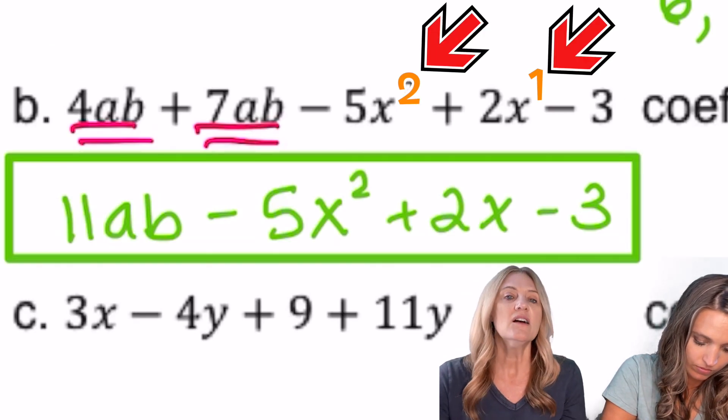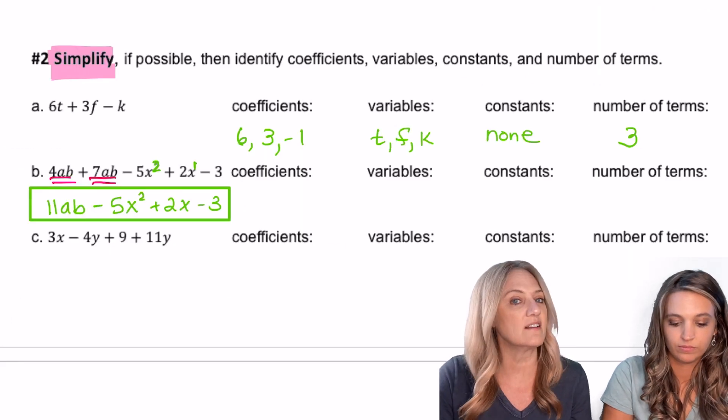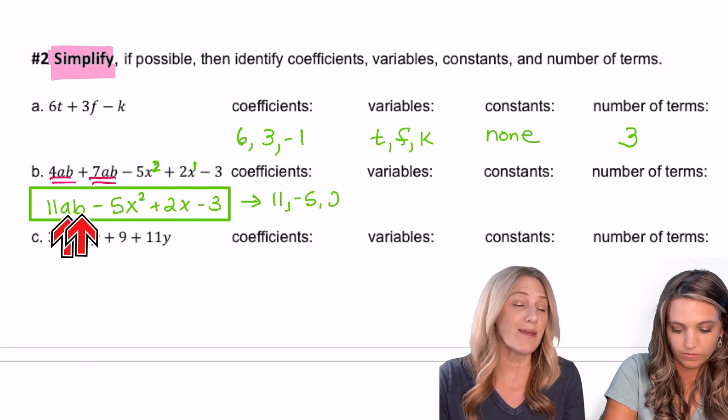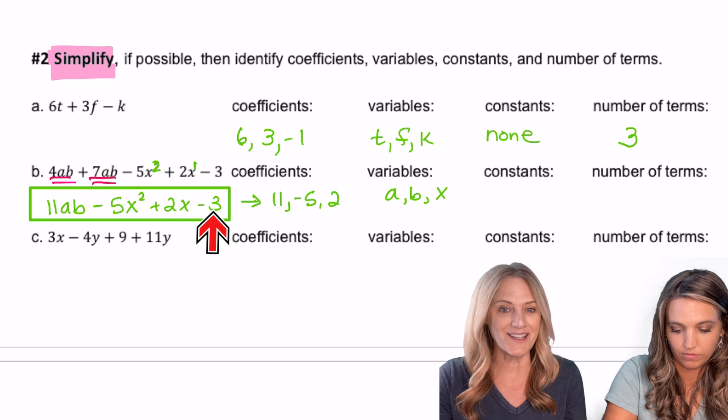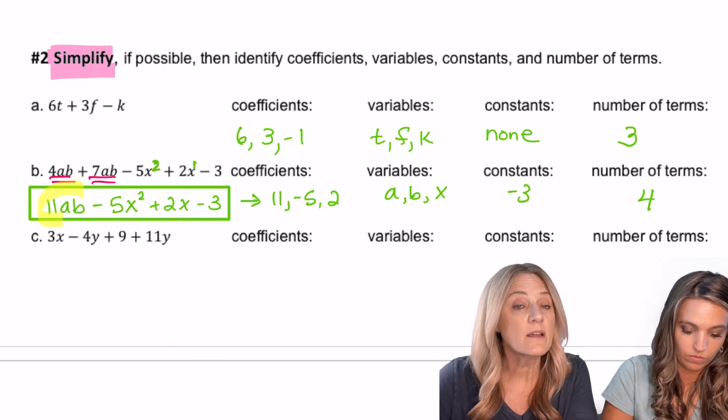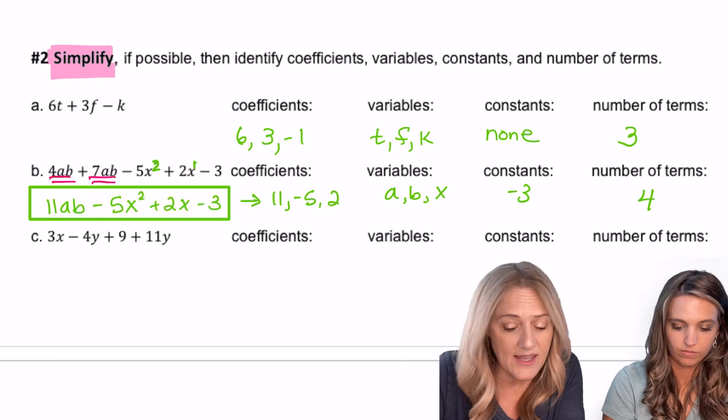Now identifying from our simplified version, we have coefficients: 11, negative 5, 2. Variables: a, b, x. We do have a constant: negative 3. And number of terms: 4, 1, 2, 3, 4.